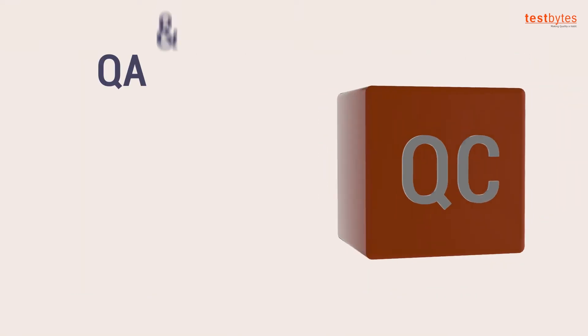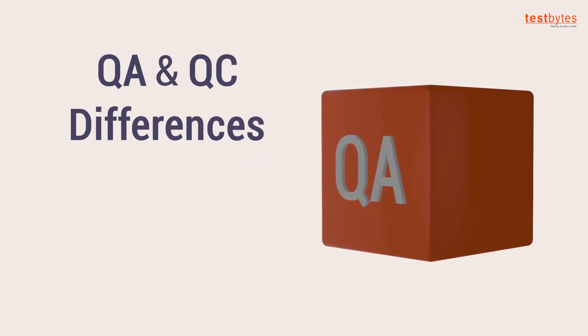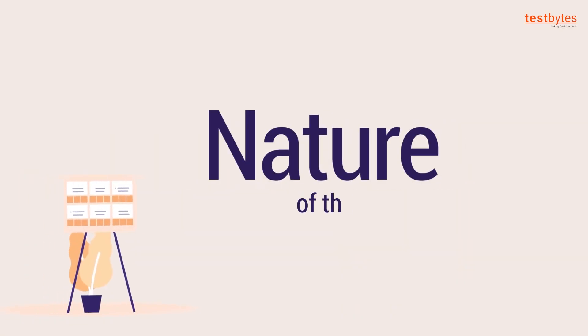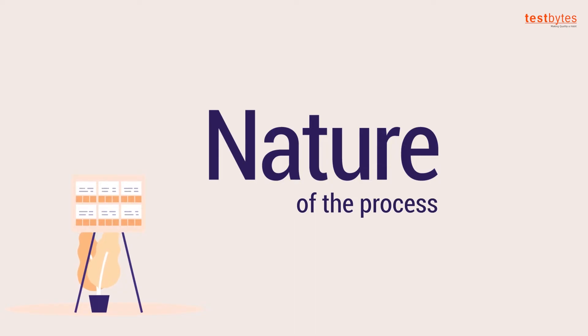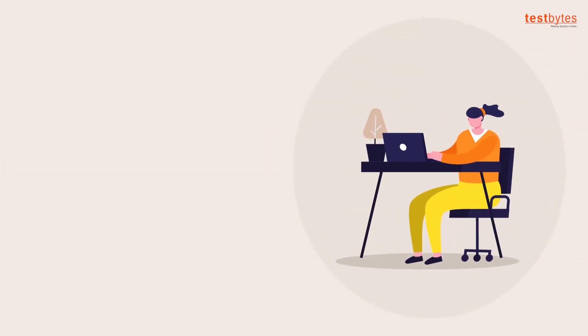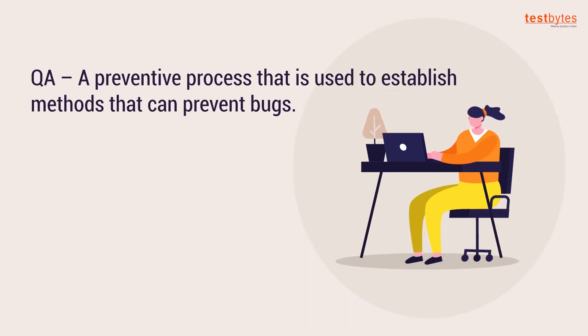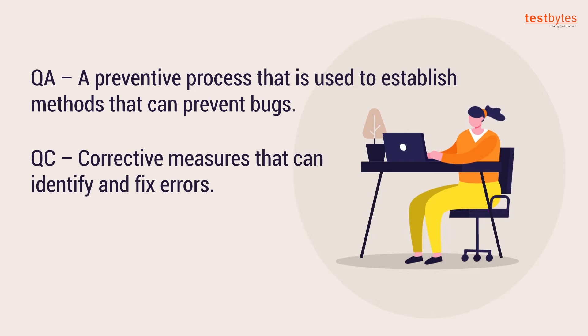QA and QC — how do they differ? By nature of the process, QA is a preventative process used to establish methods that can prevent bugs. QC is a corrective process that can identify and fix errors.